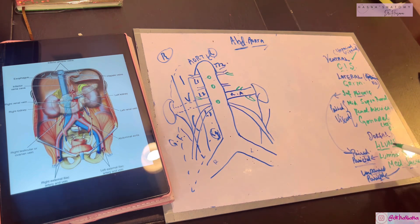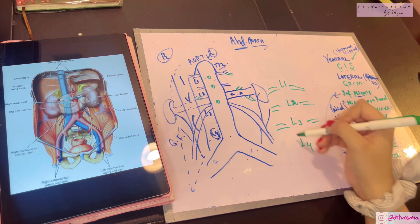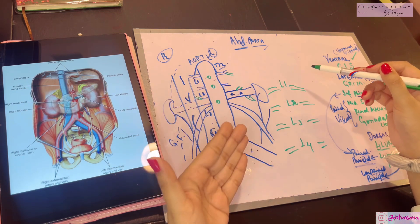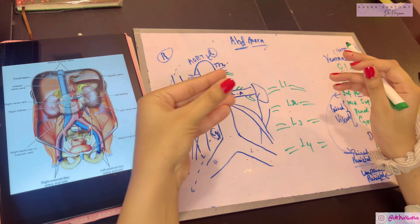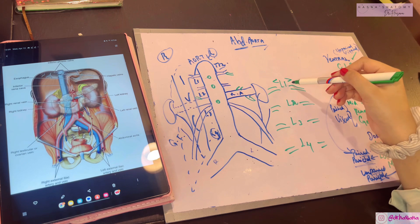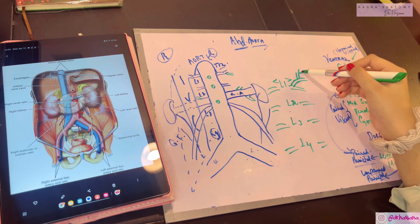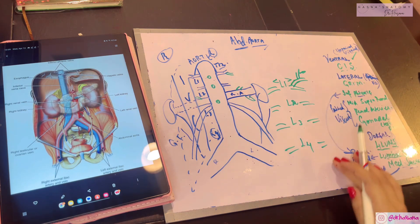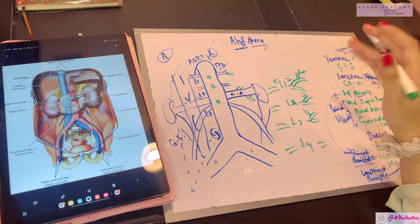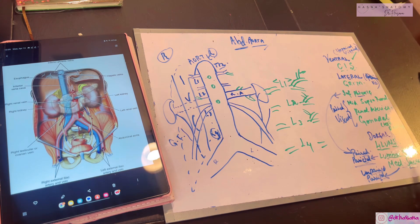The lumbar arteries are dorsal branches coming in four pairs, one pair opposite each vertebra. They run deep to the crura of the diaphragm and deep to psoas major, ending between the transversus abdominis and internal oblique muscles. At the root of the transverse processes, they give off a dorsal branch, which further gives a spinal branch supplying the vertebral canal. These arteries ultimately supply the posterior abdominal wall muscles and skin of the back.